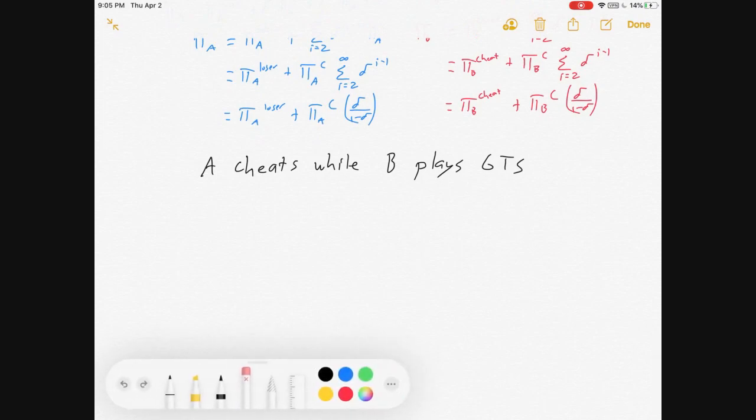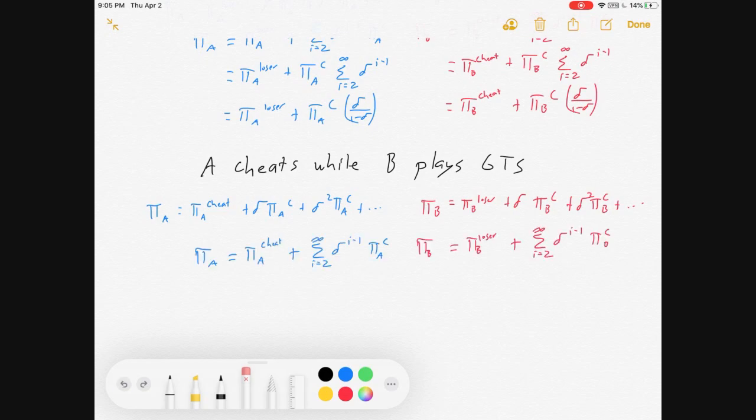Alright, vice versa, if A cheats while B plays Grim Trigger Strategy, all the same ideas, only A gets the cheating profit first, and B gets the loser profit first. And then they have repeated Cournot. So, that kind of looks the same.